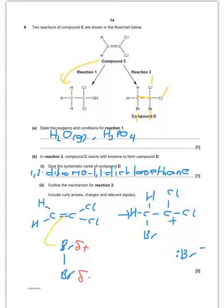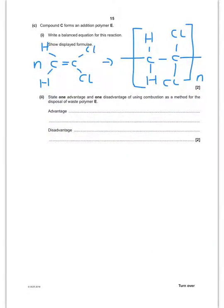Mechanism - of course first of all the electrons come out of the double bond to go to that bromine. The bromine-bromine bond breaks and then that bromine attacks the carbocation there.